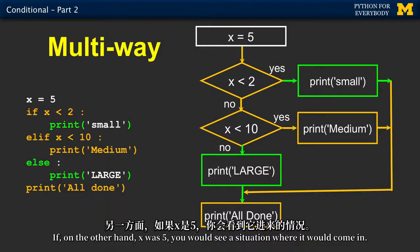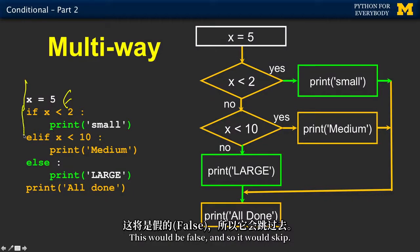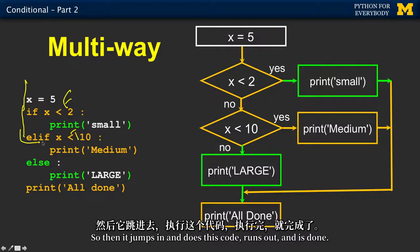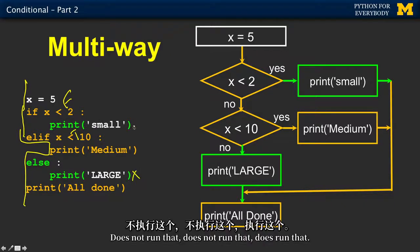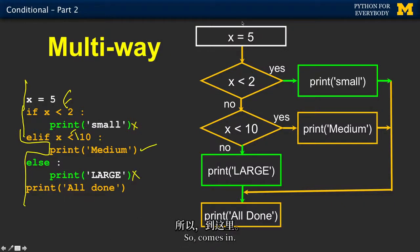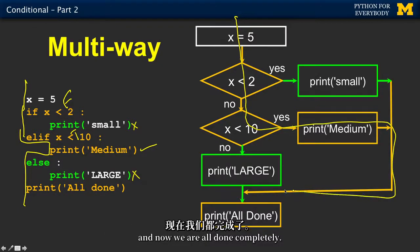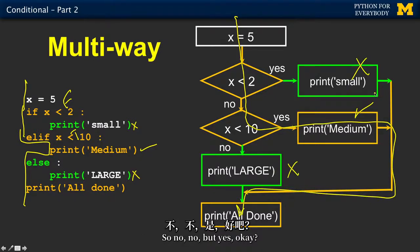If, on the other hand, x was five, you would see a situation where it would come in. This would be false, and so it would skip. Then it comes to this next elif, this becomes true. So then it jumps in and does this code, runs out and is done. Does not run that, does not run that, does run that. So comes in, no, it's not less than two, it is less than ten. So we'll run that little block of code, and now we are all done completely.